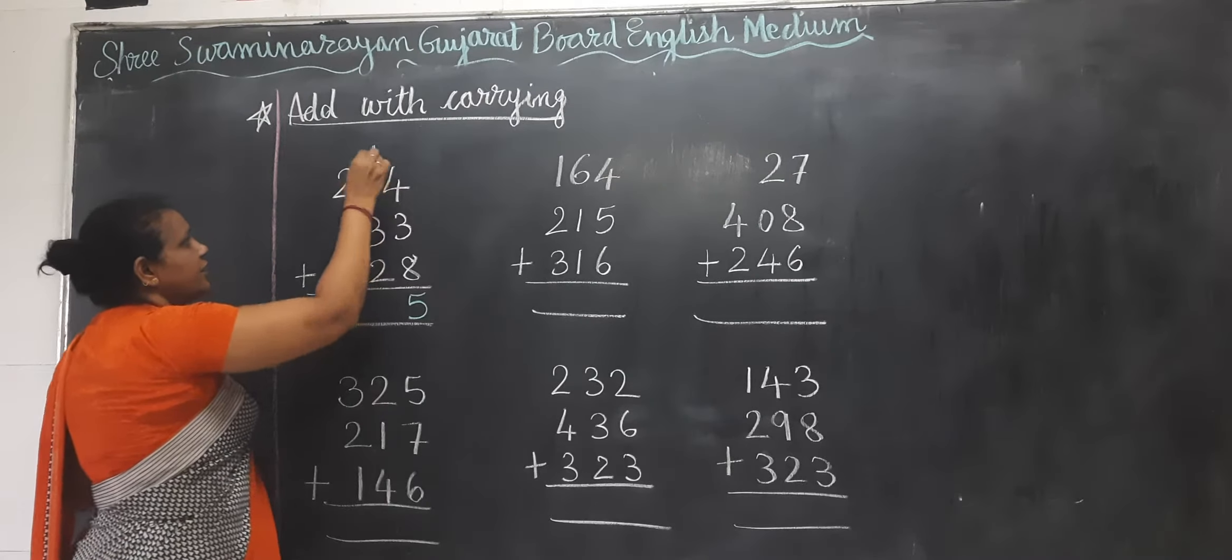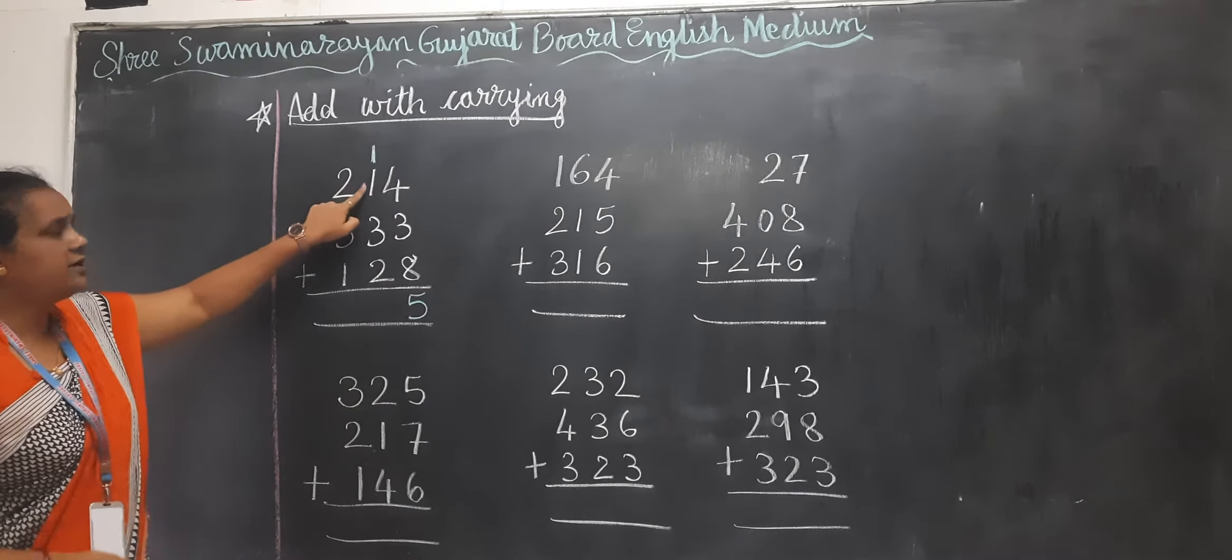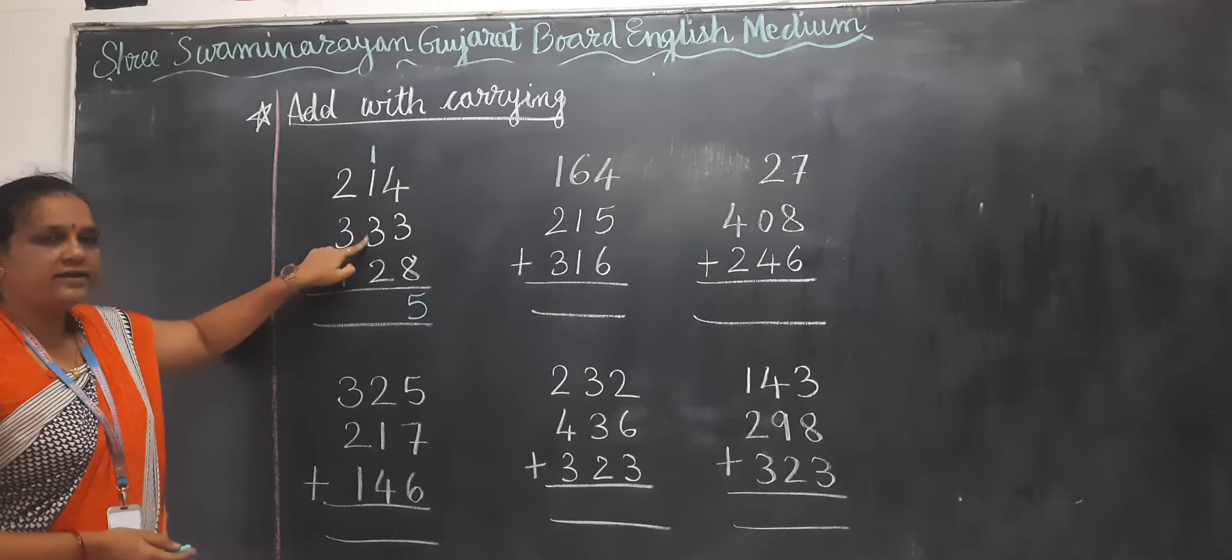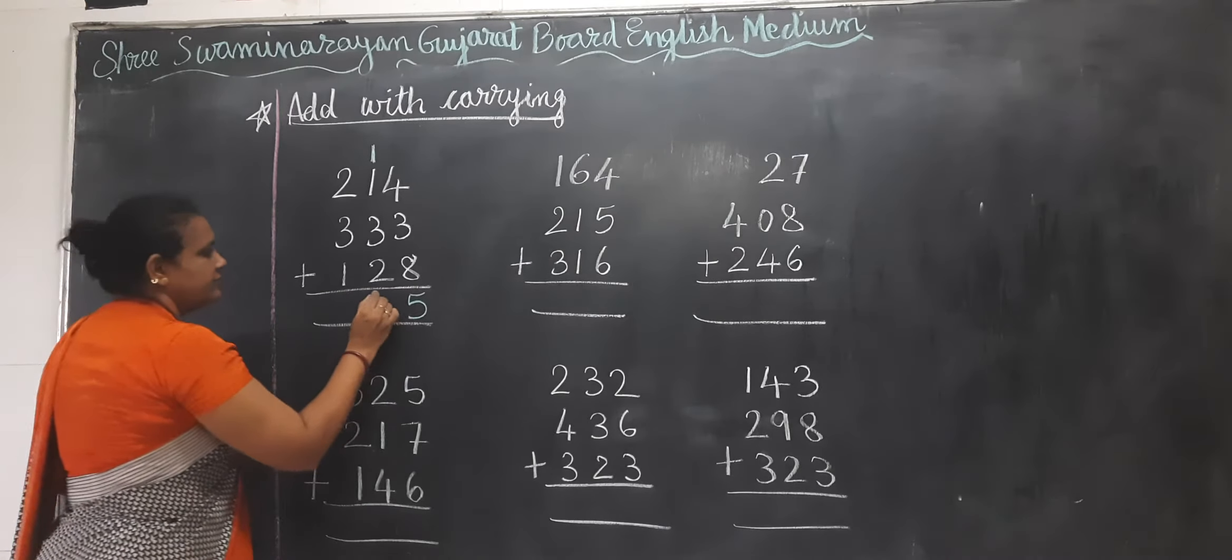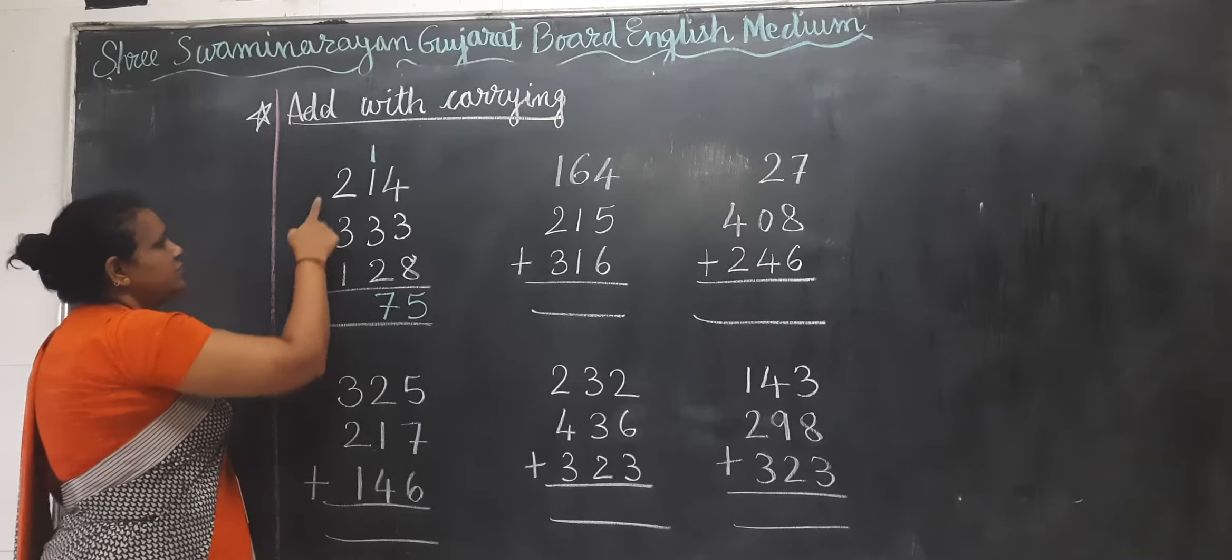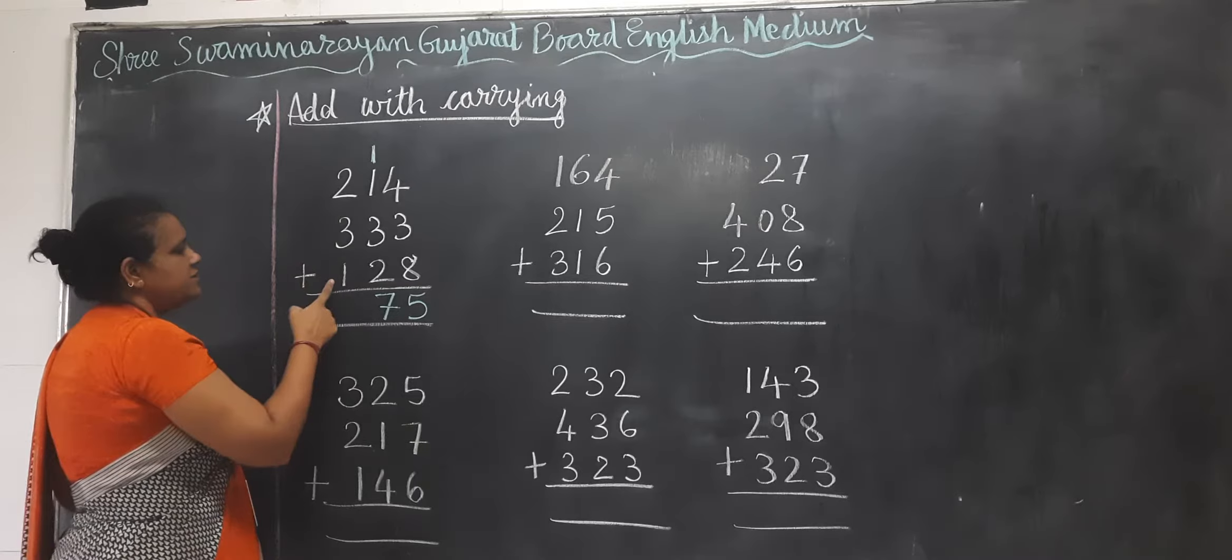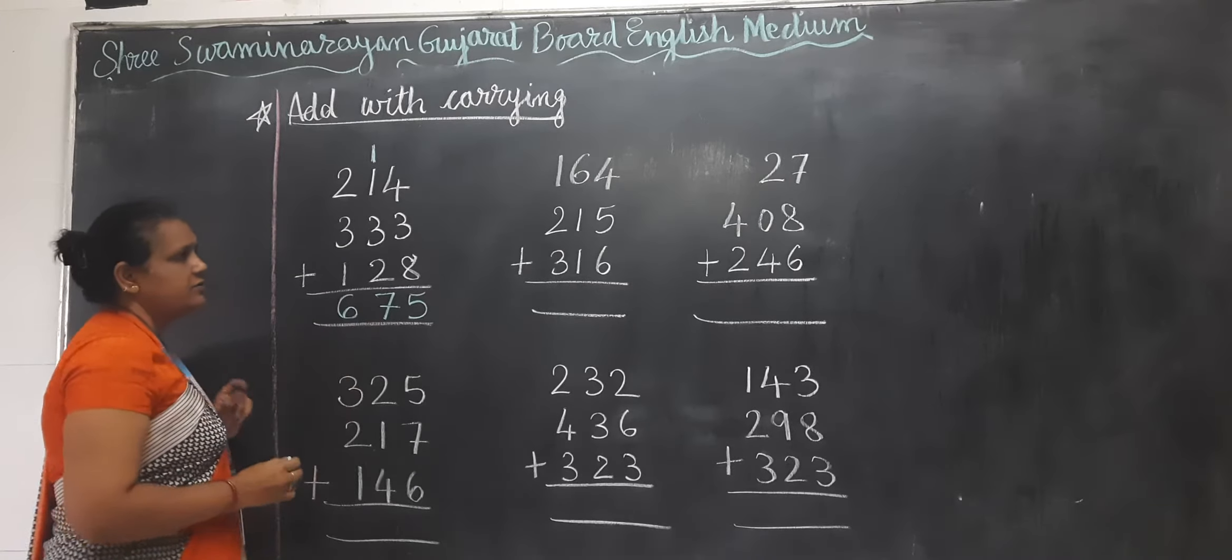Now next. 1 plus 1 equals 2. 2 plus 3 equals 5. 5 plus 2 equals 7. Only single number came, so 7. 2 plus 3 equals 5. 5 plus 1 equals 6.